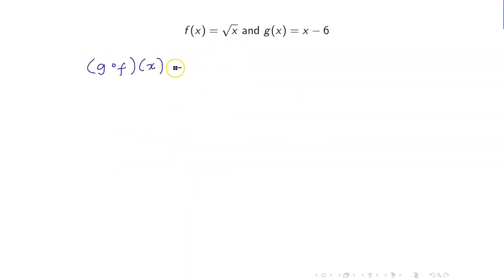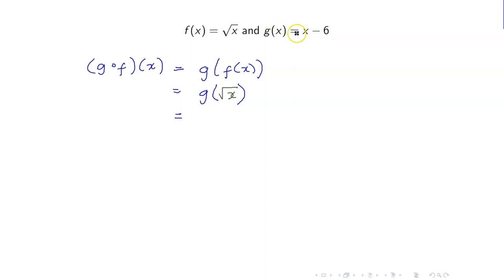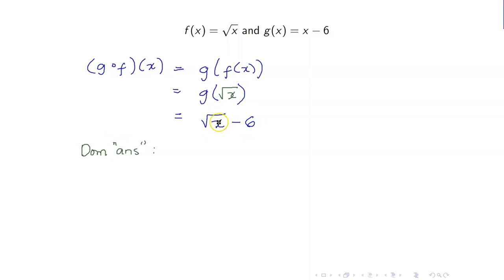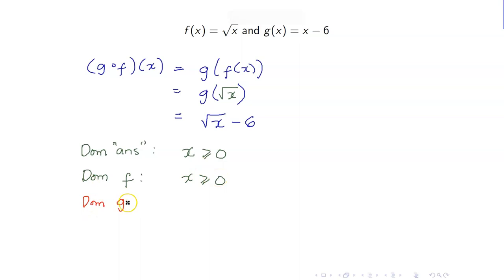Let us get the domain of g circle f. First, compute g circle f of x, which is g of f of x. f of x is square root of x. g of square root of x — replacing x in g by square root of x — becomes square root of x minus 6. The domain of square root of x minus 6 requires the radicand x to be greater than or equal to 0. The domain of the inner function f also requires x greater than or equal to 0. So the domain of g circle f is the intersection of these two, which is 0 to infinity.